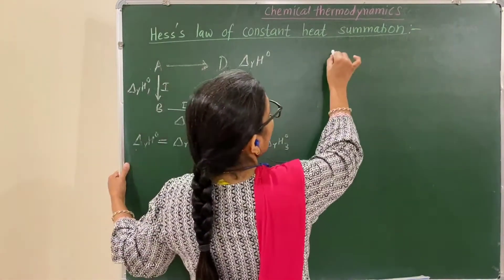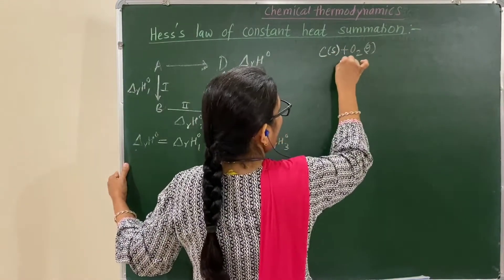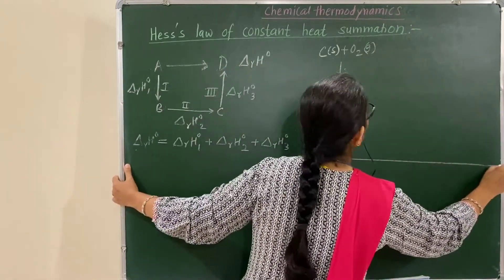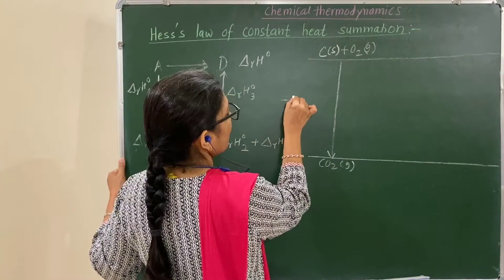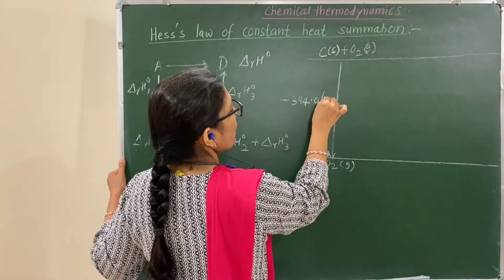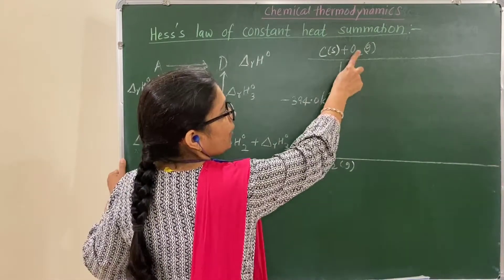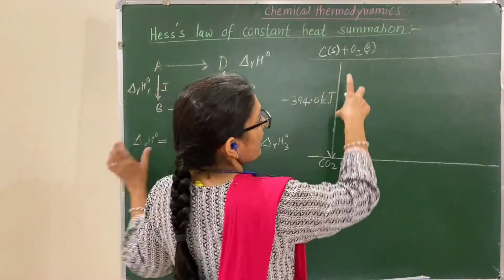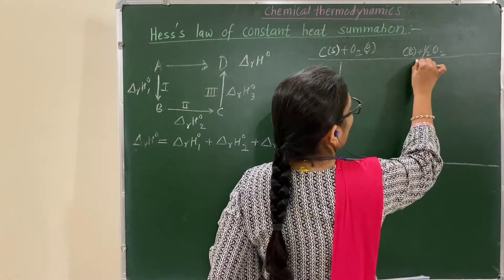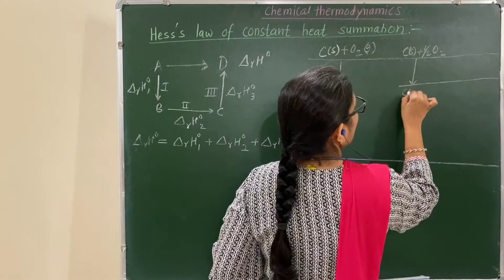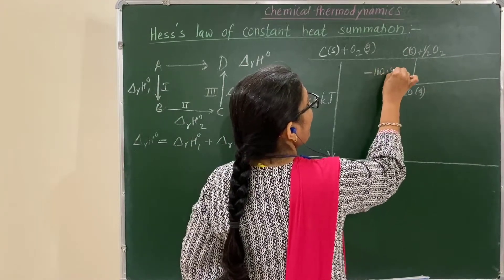Let us see one example. Carbon in the solid state reacts with oxygen gas to give CO2 gas — this reaction is carried out in one step, directly converting carbon into carbon dioxide. The change in enthalpy for this reaction is minus 394 kilojoule. Now suppose the same reaction is carried out in two steps: first, carbon solid reacts with half O2 to give carbon monoxide gas, with enthalpy change of minus 110.5 kilojoule.